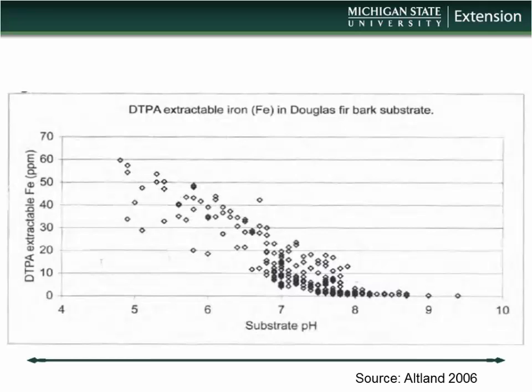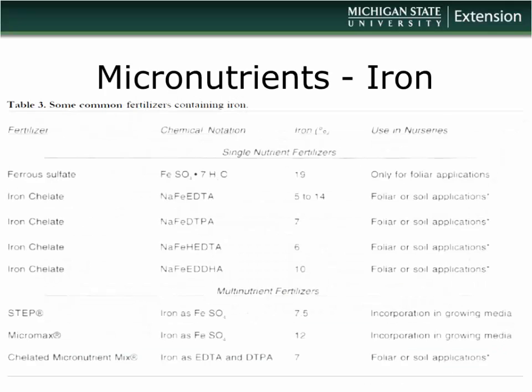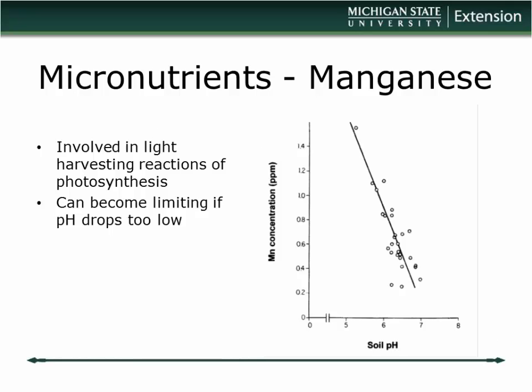For container substrates, bump that down about a pH unit: if 6.5 is optimum in the field, 5.5 is probably your target for containers. Options for adding iron include iron chelates — a larger molecule that encapsulates the iron and releases it to the plant — and ferrous sulfate, another material for addressing iron deficiency.